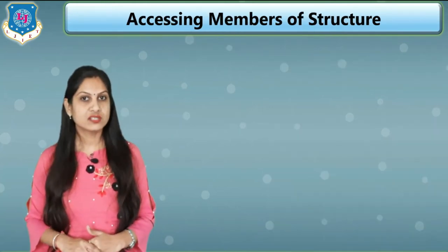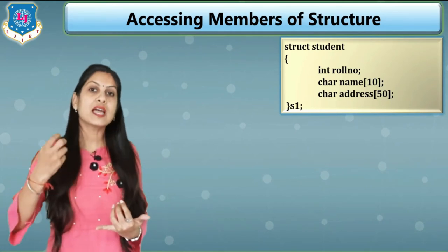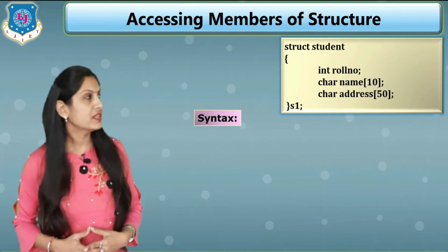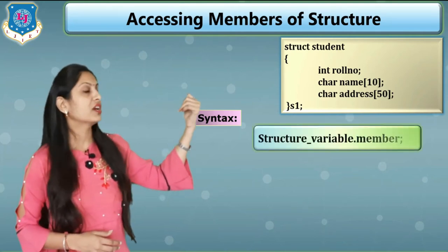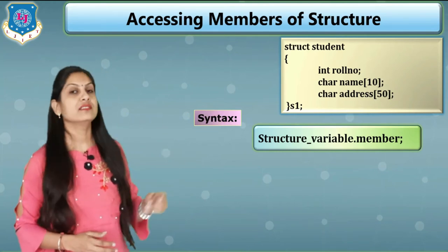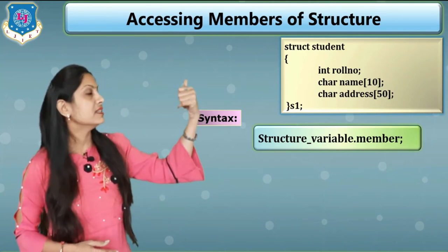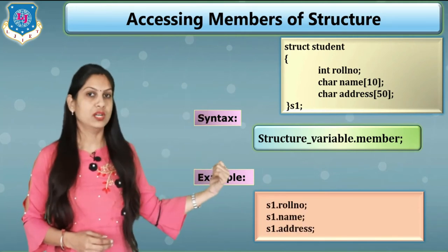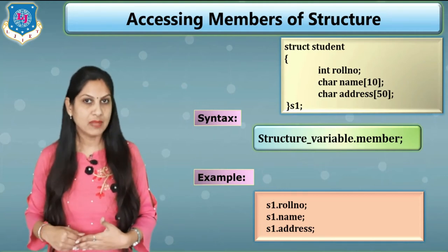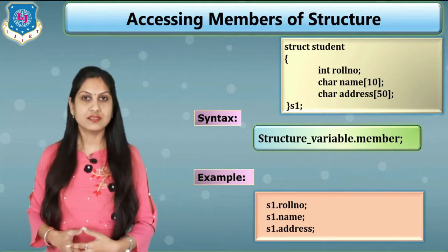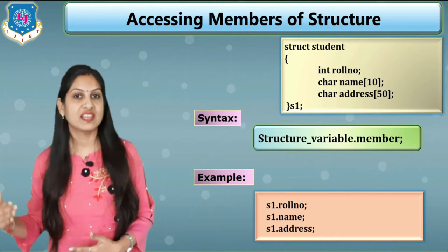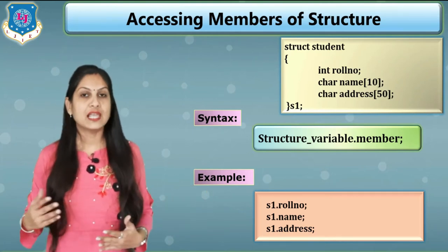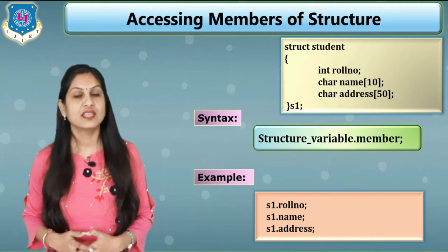Here the members are role number, name, and address. To access those members we use the dot operator. For example, the syntax is: structure variable, then dot sign, then the structure member. If the structure variable is s1, you write s1.roleno, s1.name, s1.address. Suppose you have three variables s1, s2, s3 and want to access the third student's role number, you write s3.roleno. You can use the dot operator to access any member.